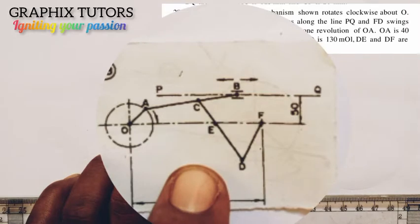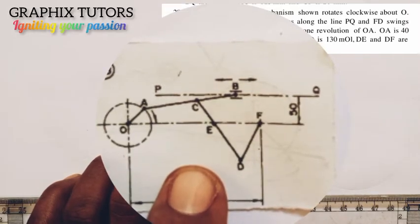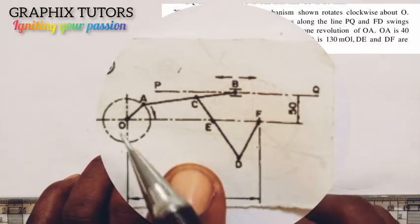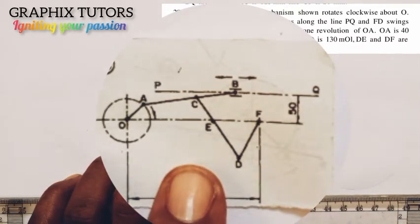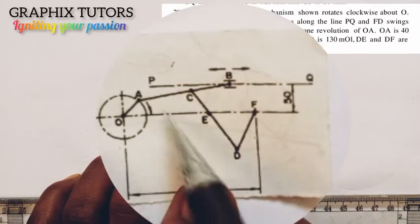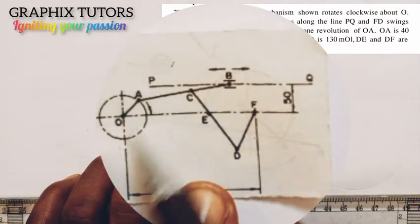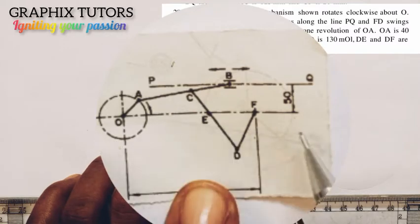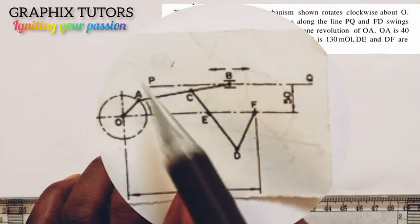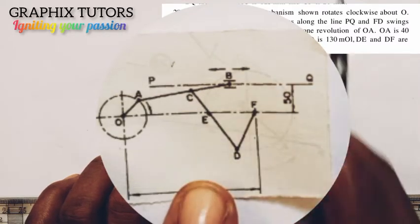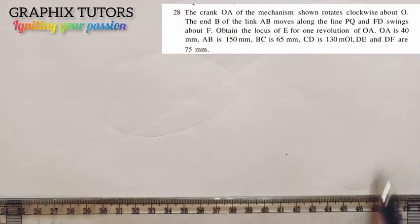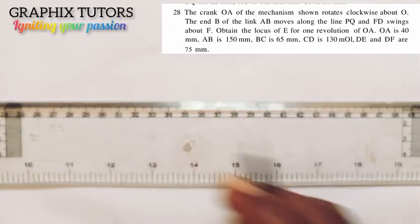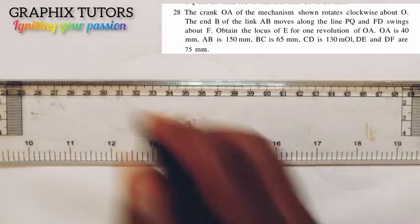The parameters given: OA is 40 millimeters, AB is 150 millimeters, BC is 65 millimeters, CD is 130 millimeters, DE and DF are 75 millimeters. To give a clearer view I will use this diagram. The first thing we should do is draw our horizontal line and our vertical line so we can draw our crank OA.